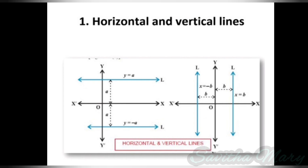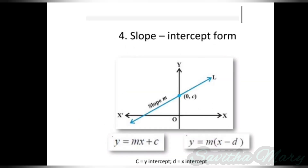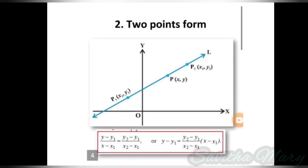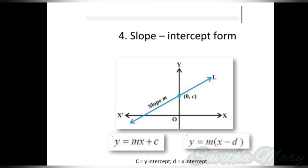This is the pattern of horizontal and vertical lines, two-point form, point-slope form, and slope-intercept form. In this video, I am going to explain three types of problems. First problem is two-point form, with equation: y minus y1 equal to (y2 minus y1) divided by (x2 minus x1), into (x minus x1). Second is point-slope form, using equation y minus y0 equal to m into (x minus x0), where m represents the slope. Third is slope-intercept form: y equal to mx plus c, where m is slope and c is the y-intercept.